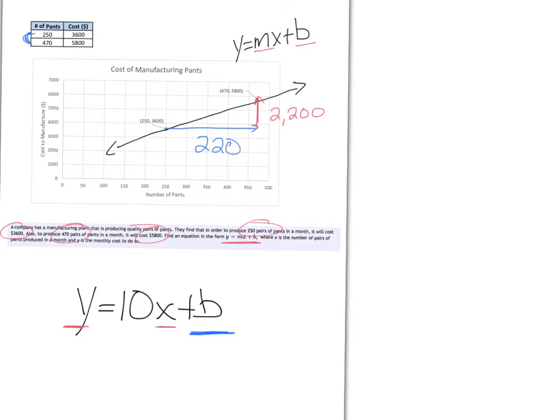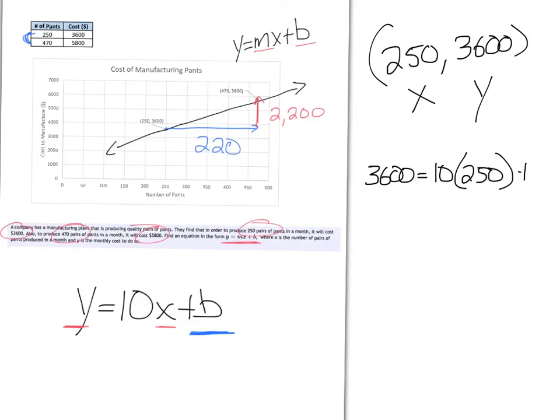I'll use the information for the 250 pairs of pants. We have that 250 pairs of pants cost $3,600. Again, the 250 is the X, the 3,600 is the Y. Plugging those pieces of information in for X and Y, we will get that 3600 equals 10 times 250 plus B.